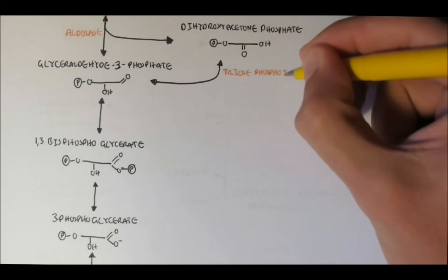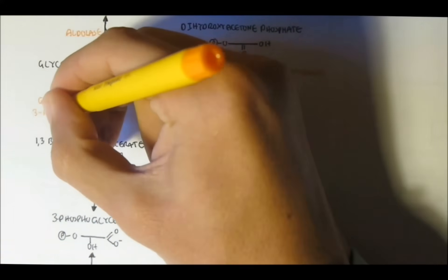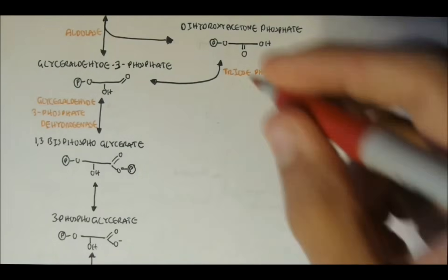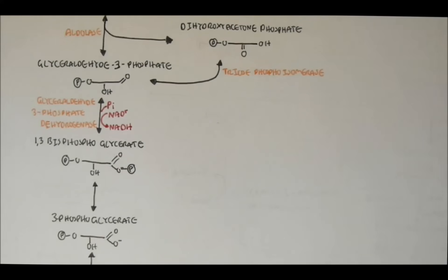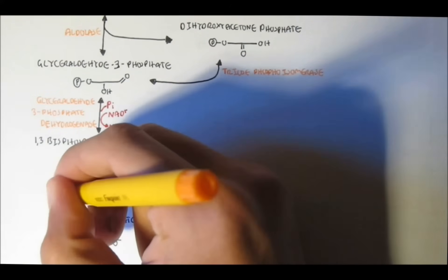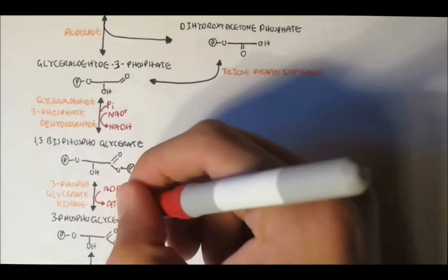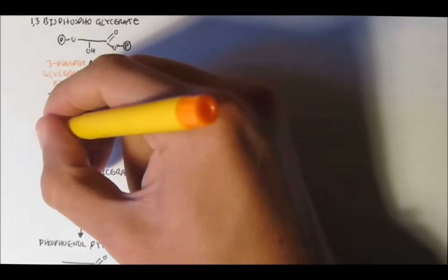However, in glycolysis, dihydroxyacetone phosphate will usually convert to glyceraldehyde-3-phosphate to continue glycolysis. So there are two glyceraldehyde-3-phosphates now in glycolysis, but for simplicity, I will only pretend there is only one. So, one glyceraldehyde-3-phosphate with the enzyme glyceraldehyde-3-phosphate dehydrogenase will convert to 1,3-bisphosphoglycerate, the phosphate coming from inorganic phosphate. And also in this reaction, hydrogen was removed by NAD+ to form NADH. 1,3-bisphosphoglycerate with the enzyme 3-phosphoglycerate kinase will dephosphorylate the phosphate from the first carbon by transferring it to ADP, making 3-phosphoglycerate.